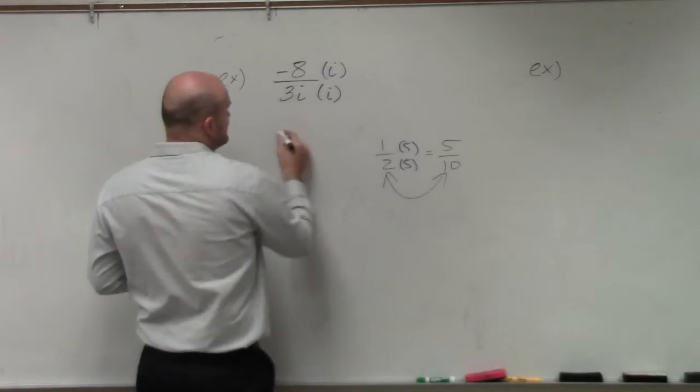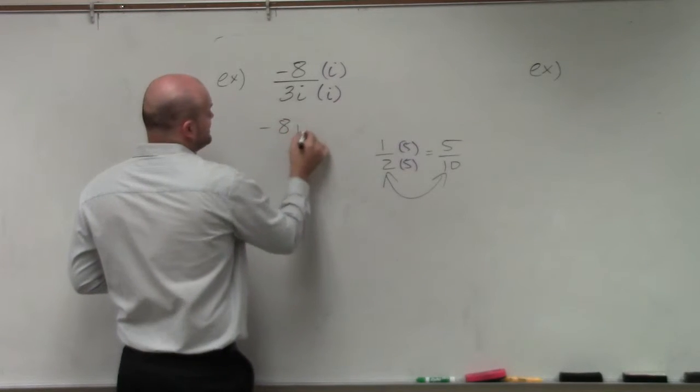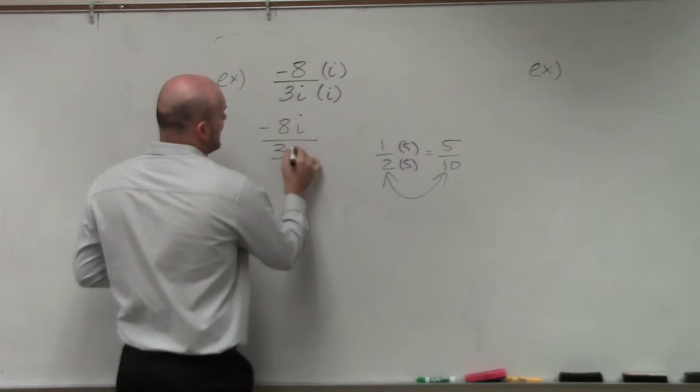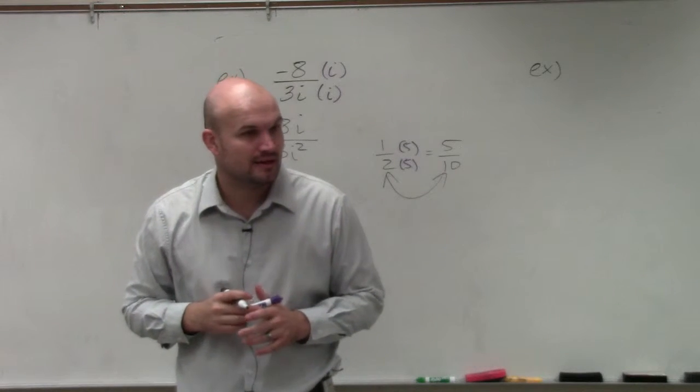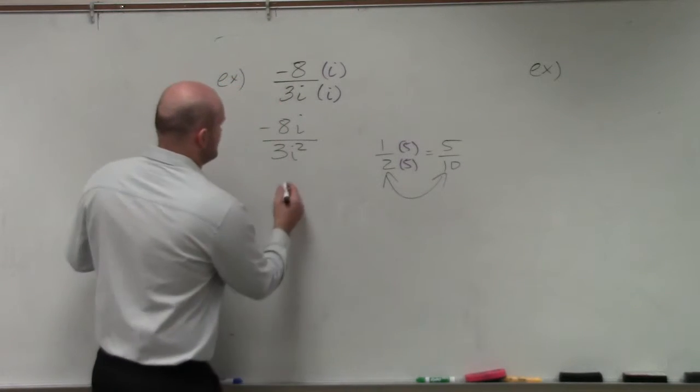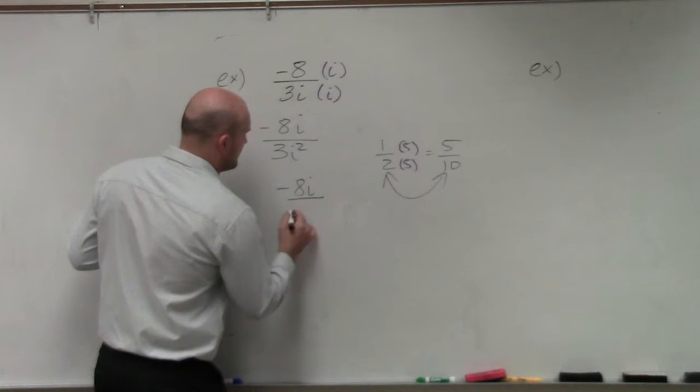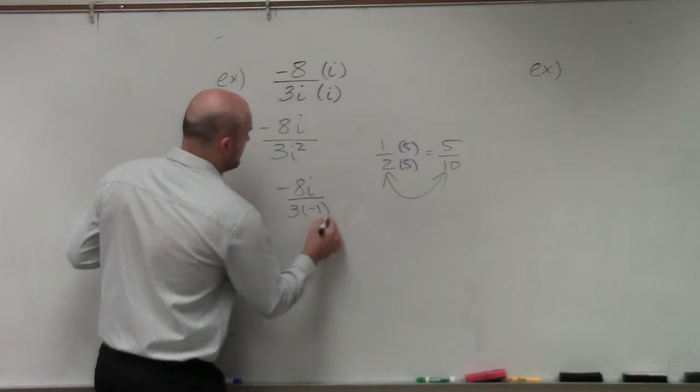However, when I do this, I now obtain negative 8i over 3i squared. Well, what is i squared represented? Negative 1. Negative 1. So I have negative 8i over 3 times negative 1.